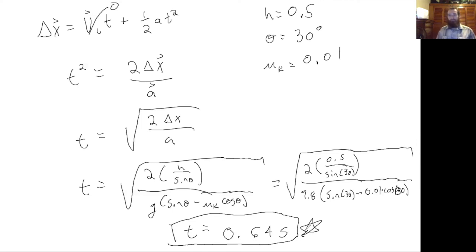To summarize: we started with a statics problem to find what coefficient of friction keeps a block stationary on a ramp, arriving at mu equals tangent theta. Then we assumed the coefficient of friction was less than that value so the block moves, found the acceleration using Newton's second law, and used kinematics equations to determine how long it takes the block to slide down. This has been a Dr. Straussbaum lecture — don't forget to like, subscribe, and ring the bell for notifications.